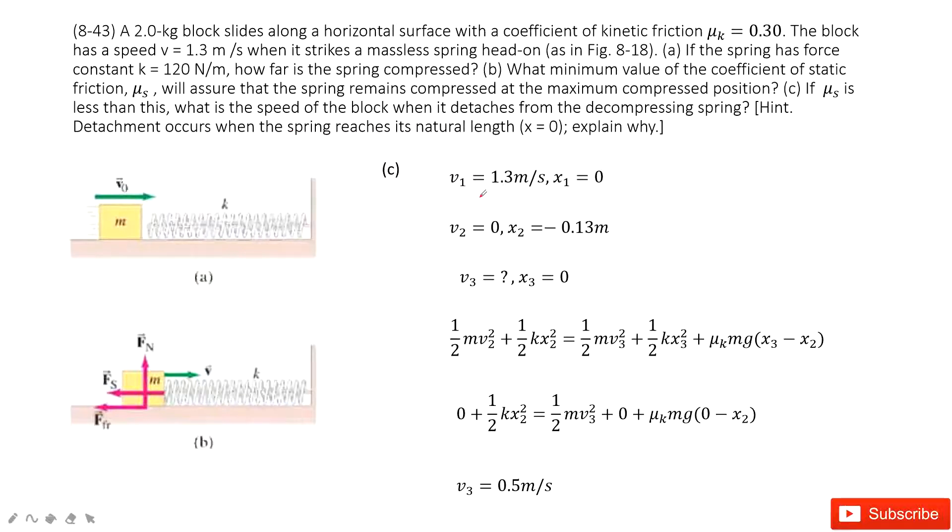We can see initial position is 0, initial velocity and initial position. And at v2, we can say this is x1, we think it is 0. And x2 is the stationary position. And there, we can consider it is negative 0.13 meter because the spring is compressed.